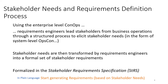The stakeholder needs requirements and definition process is defined in the system engineering handbook as using the enterprise-level concept of operations (ConOps) previously defined in the business and mission analysis. Requirements engineers lead stakeholders from business operations through a structured process to elicit stakeholder needs in the form of a system-level OpCon. The stakeholder needs are then transformed by requirements engineers into a formal set of stakeholder requirements, all formalized in the stakeholder requirements specification. In plain language, we generate requirements through interactions with stakeholders.